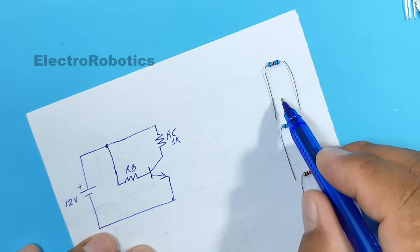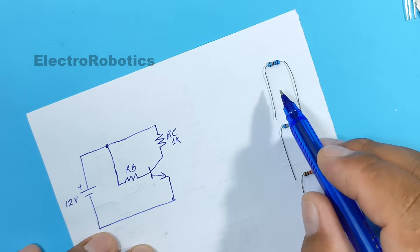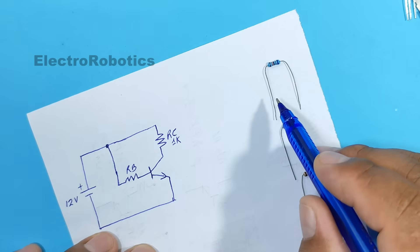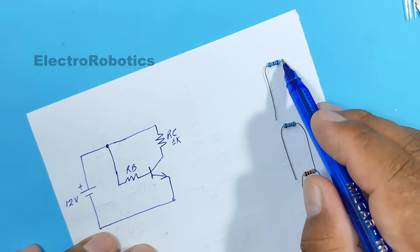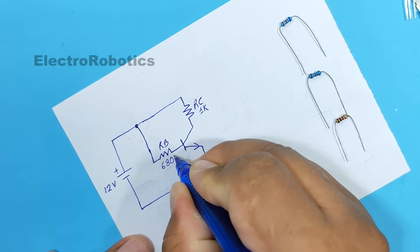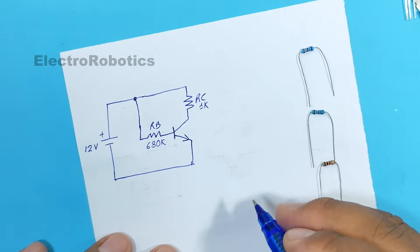It could be 100 kiloohms, or it could be 220, 470, or 680, or even 1 megaohm. In this case, we're going to use a 680 kiloohm resistor.